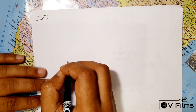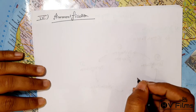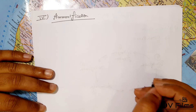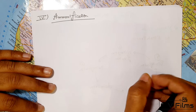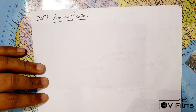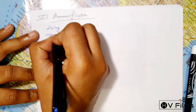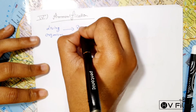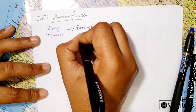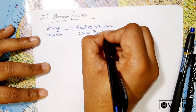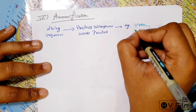The fourth stage is ammonification. In ammonification, when a living organism like a plant dies and returns to the soil, it releases nitrogenous waste products in the form of urea and uric acid. This whole process is called ammonification.